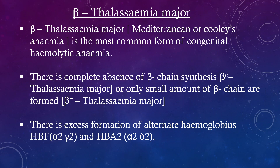Beta-thalassemia major, also known as Mediterranean or Cooley's anemia, is the most common form of congenital hemolytic anemia. There is complete absence of beta chain synthesis (beta-0-thalassemia major), or only small amounts of beta chains are formed (beta-plus-thalassemia major). There is excess formation of alternate hemoglobins: HbF (alpha-2-gamma-2) and HbA2 (alpha-2-delta-2).